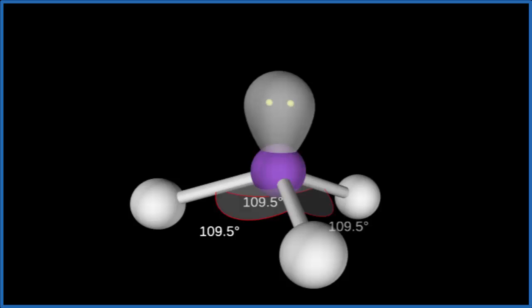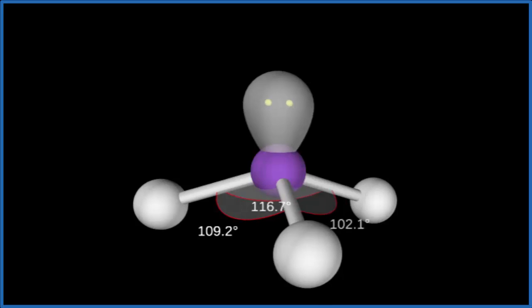If you wanted to look at the electron geometry, you'd have to count all four things that are attached. 1, 2, 3, 4. So you'd have a tetrahedral electron geometry. Back to our Lewis structure.